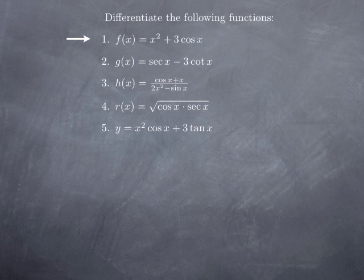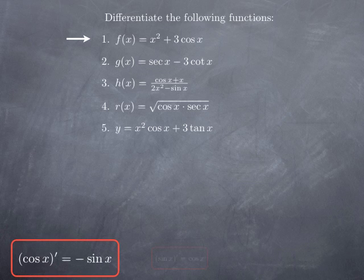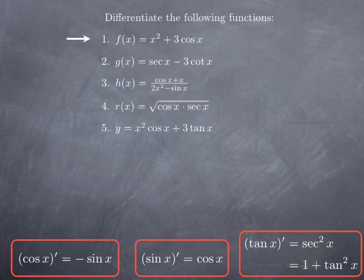We have seen formulas to differentiate all six trig functions, but the basic ones are the derivative of cosine x, sine x, and tangent x. If we differentiate x squared plus 3 cosine x, the derivative of a sum is the sum of the derivatives, so we get the derivative of x squared plus the derivative of 3 cosine x, which is 3 times the derivative of cosine x.